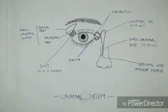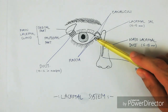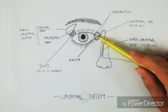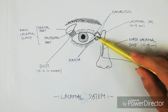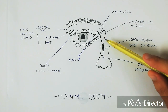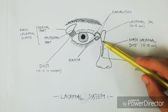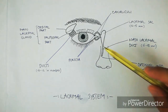Moving on to the excretory system: it first consists of the lacrimal puncti. These are two small, rounded openings on the upper and lower lid margins at the inner canthus. The puncta are situated on a small elevation called the papilla, and it is through these that the lacrimal canaliculi originate.